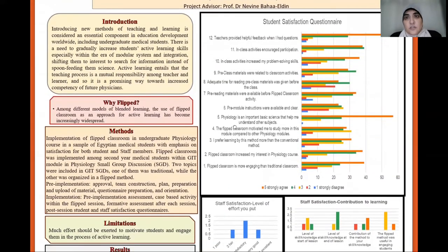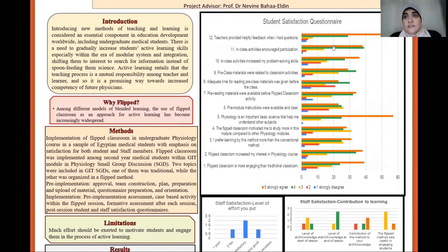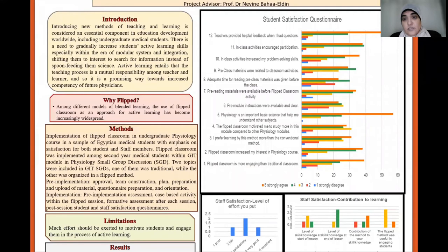Now we move on to the student satisfaction questionnaire. We had a 12-item questionnaire to be fulfilled by all the students. Regarding the flipped classroom being more engaging, most of the students agreed that the flipped classroom is more engaging than traditional classroom. It also increased their interest in physiology course. A big number agreed that they prefer learning by this method than the conventional method. Also, they almost agreed that the flipped classroom motivated them to study more in this module compared to other physiology modules.